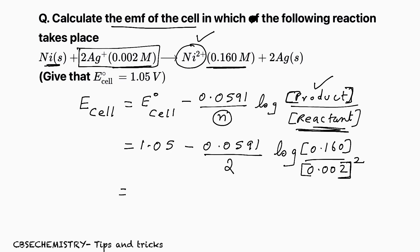Now, you can simplify this. 1.05 minus 0.0591 by 2 log, on numerator you have 16 × 10^-2. Instead of 0.16, I write 16 × 10^-2. On denominator, we have 2 × 10^-3 whole square. 0.002 means 2 × 10^-3.